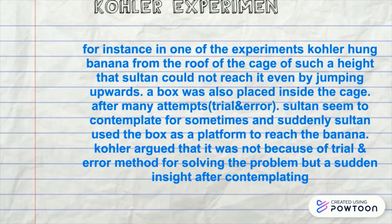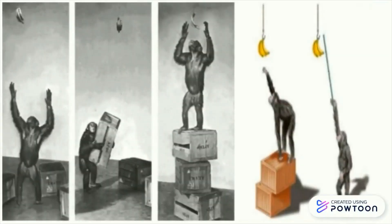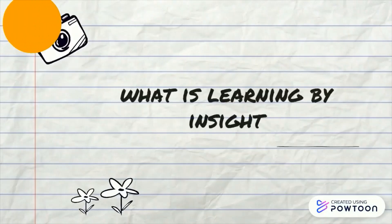In one of the experiments, Köhler hung a banana from the roof of the cage at such a height that Sultan could not reach it even by jumping upwards. A box was also placed inside the cage. After many attempts, Sultan seemed to contemplate for some time and suddenly used the box as a platform to reach the banana. Köhler argued that it was not because of trial and error method but a sudden insight after contemplating.